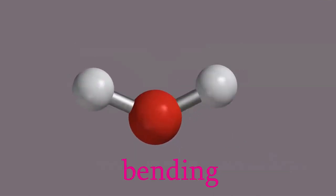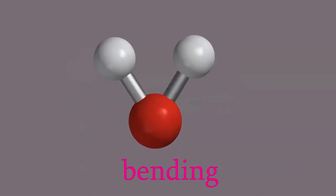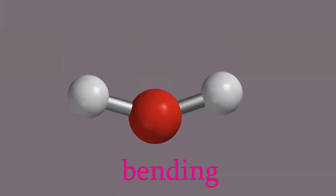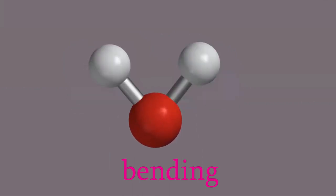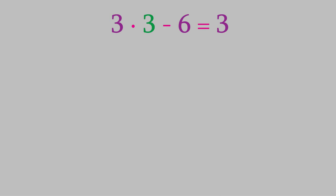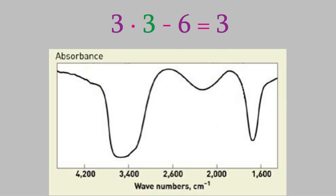And finally there's the bending vibration. In this one, the bond lengths don't actually change at all — instead, it's the bond angle that gets larger or smaller. We saw earlier that water can only have three vibrations, because the formula 3n minus 6 gives us 3 for water. Since all three of these vibrations cause the electric dipole moment of water to change, all three of them appear in the spectrum.